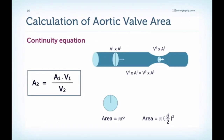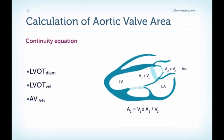To calculate the aortic valve area, we use the continuity equation, which is based on the principle that the relationship between area and velocity remains constant before and at the stenosis. We can calculate the area by measuring the diameter and multiplying by pi. The three required measurements are: the LVOT diameter (measured in the parasternal view), the LVOT velocity by pulsed wave Doppler in the five-chamber view, and the aortic valve velocity by continuous wave Doppler in the five-chamber view.